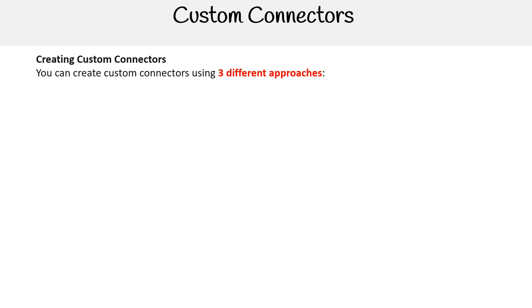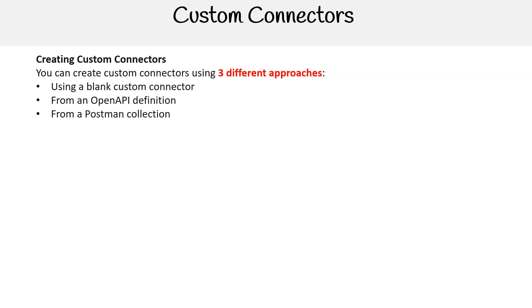You can create custom connectors using three different approaches: using a blank custom connector, from an open API definition, and from a Postman collection.